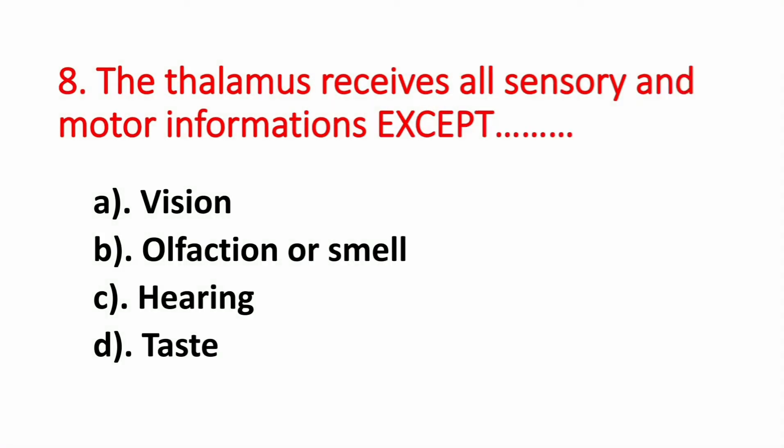Question number 8. The thalamus receives all sensory and motor information except? Option A: Vision. Option B: Olfaction or smell. Option C: Hearing. Option D: Taste. The answer is Option B, Olfaction or smell.